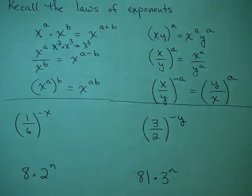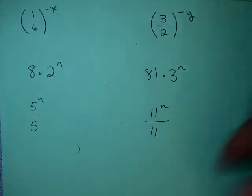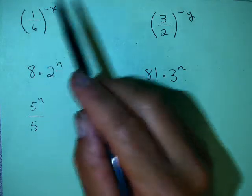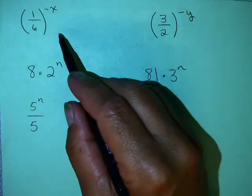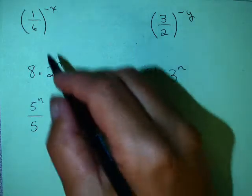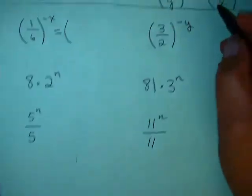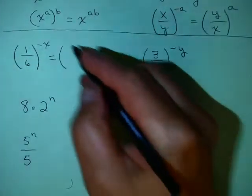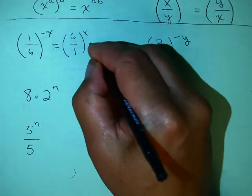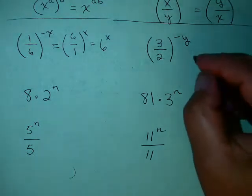So let's apply these to a few practice problems. 1/6 to the minus x — exponential functions are going to use these rules of exponents. By this rule, that gives us 6 over 1 to the x. Of course, 6 over 1 is just 6, so that's 6 to the x.